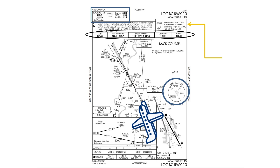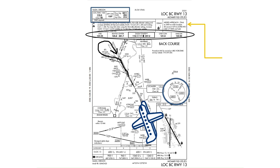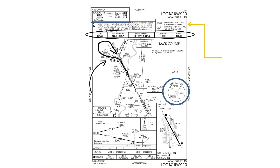A pilot approaching on the front course on a heading of 3-1-3, which is the 180-degree reciprocal of the back course approach heading of 1-3-3, would make a 45-degree turn to the left on a heading of 2-6-8 near the initial fix of McCoy to make the 180-degree turn to the final approach course of 1-3-3. This is illustrated in the profile view at the bottom of the chart.